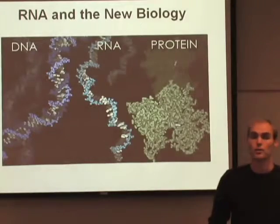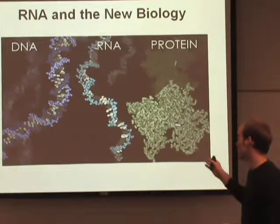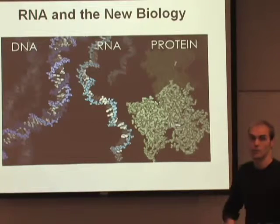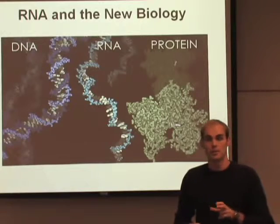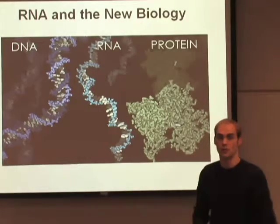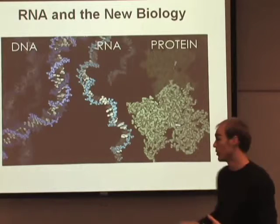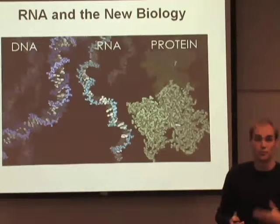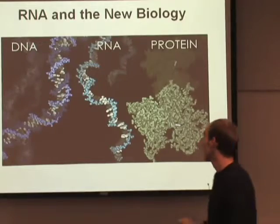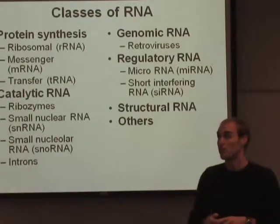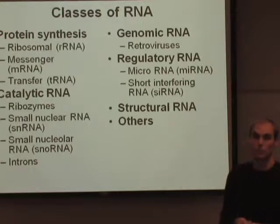Many people when they hear about RNA think of messenger RNA, which is basically a transient material that is able to transmit the genetic information shown in DNA to express a protein. But there are many different classes of RNA out there apart from the ones involved in protein synthesis.